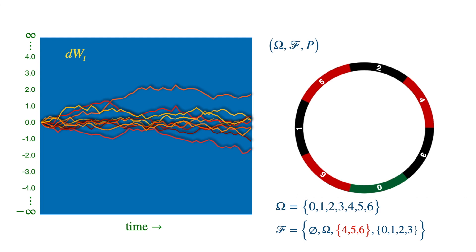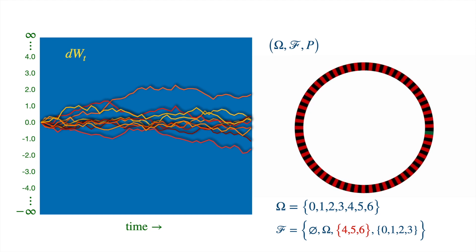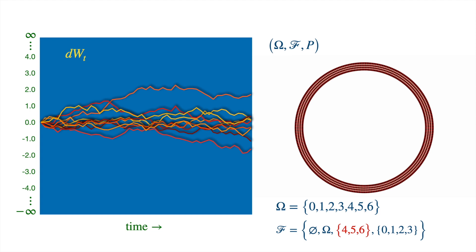Let's see one simple way one can approach the probability space of the Brownian motion. Let's generalize from the roulette example — let's increase the number of pockets. We can keep going until we can't tell red from black, and we can also split the pockets along the other dimension. In the end we will reduce the size of the individual pockets to almost the size of a point.